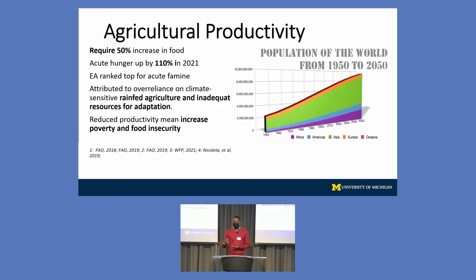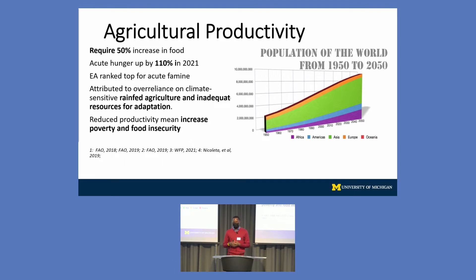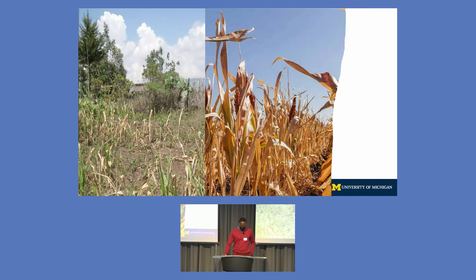There is currently about 110 percent acute famine being projected by the FAO. East Africa is one of the regions categorized by the Food and Agriculture Organization of the United Nations as ranking highest in terms of acute famine, mainly because of high dependency on rain-fed agriculture and lack of resources to adapt. Therefore there will always be an increase in food insecurity and poverty levels. For the case of Kenya, this is an example of how climate change is affecting cropping and crop productivity.